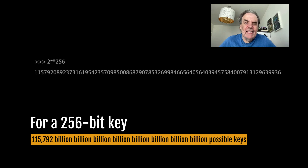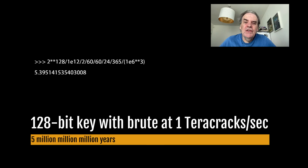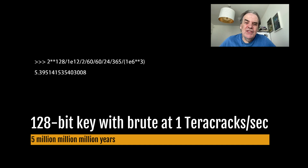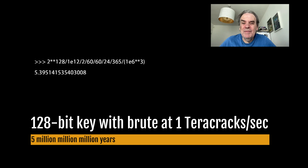That's a lot of keys. To crack a 128-bit encryption key with brute force using a cracker running at 1 tera cracks per second will take on average 5 million million million years to crack. A tera is a thousand billion. The calculation is 2 to the power of 128 divided by 1 times 10 to the power of 12, divided by 2, divided by 60, divided by 60, divided by 24, divided by 365, divided by 10 to the power of 6, to the power of 3.